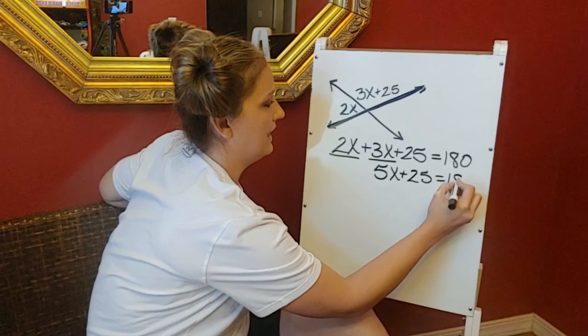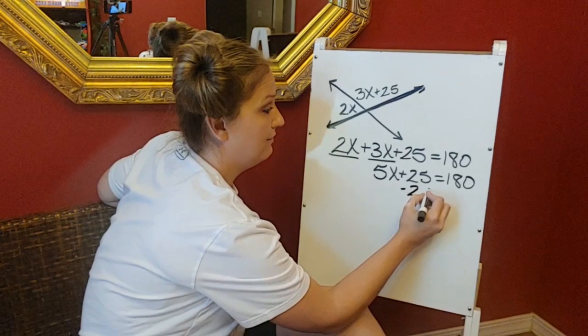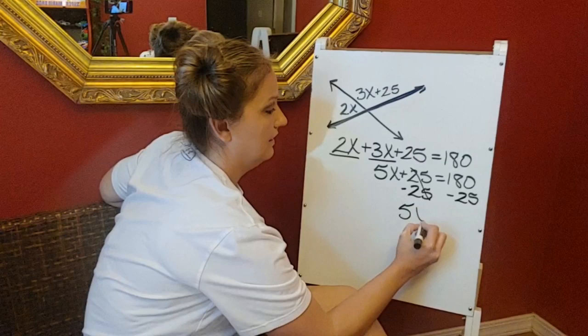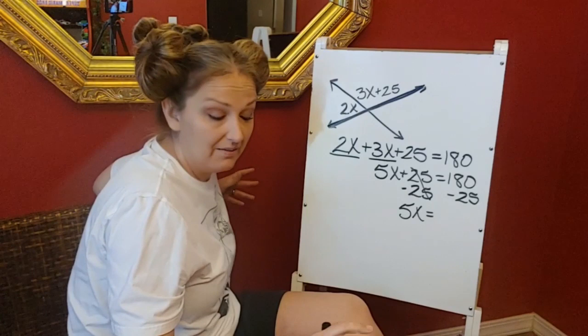Back to my two-step equation. I'm going to subtract 25 from both sides. And 5x is equal to, don't stress about using your calculator, just go ahead and use it. 180 minus 25.